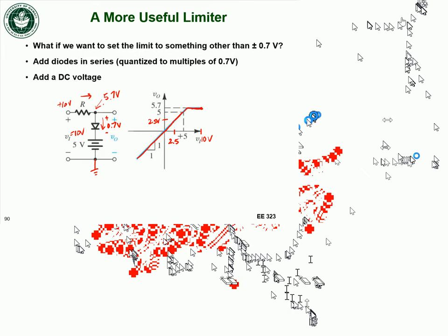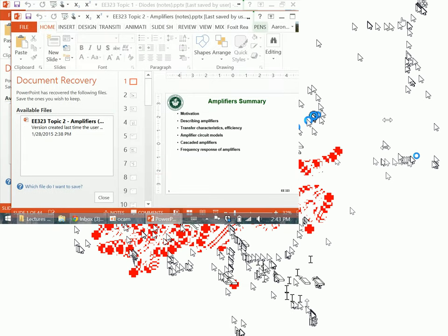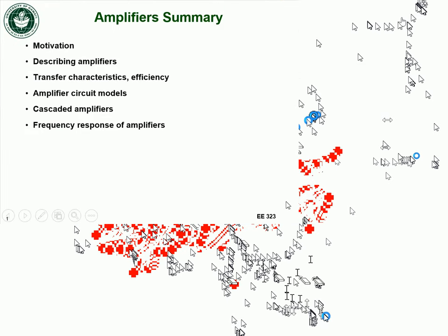Any questions on this version of the limiter? If not, then we are done talking about diodes. We are going to move on to our next topic: amplifiers. This is a topic we will stick with for pretty much the rest of the semester. When we talk about transistors, we'll be talking about transistors as amplifiers — and also as switches — but we'll spend more time on amplifiers because that's a more complicated application than just a switch.